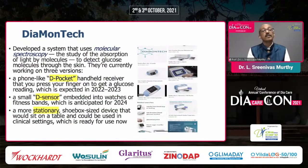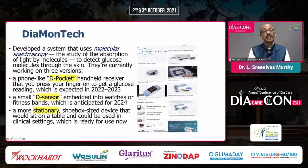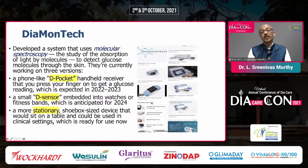Diamantec uses molecular spectroscopy — a light-based technology — to detect glucose molecules through the skin. Three varieties are available: D-Pocket, D-Sensor, and a shoebox-type stationary device for use in clinics. D-Pocket is a handheld receiver that you press your finger on to get a glucose reading without any needle. A small D-Sensor can be embedded into smartwatches for continuous readings. All these technologies are expected to become available within the next two to three years.